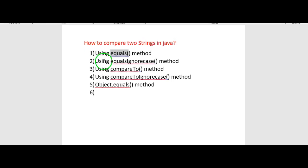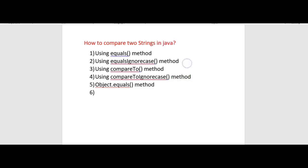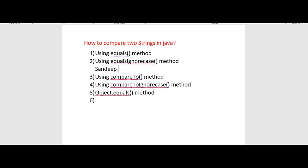The second method is equalsIgnoreCase. This method is more liberal than equals and compares two strings by ignoring their case. Suppose two strings contain the same characters in the same order, irrespective of their case — whether lower case, upper case, or camel case — they will be equal by equalsIgnoreCase. For example, 'sandeep' and 'Sandeep': equalsIgnoreCase will return true.